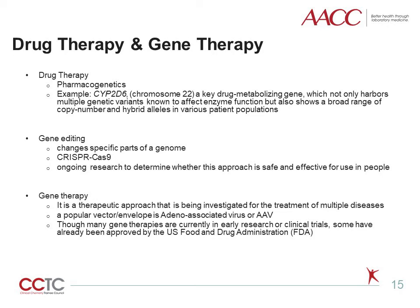Pharmacogenetics aims to study the gene variants associated with drug metabolism enzymes, transporters, and drug receptors, and to relieve the burden of sickness caused by inter-individual differences in drug response or vulnerabilities to drug toxicity. For example, the CYP2D6 gene on chromosome 22 is a key drug metabolizing gene, which not only harbors multiple genetic variants known to affect enzyme function, but also shows a broad range of copy number and hybrid alleles in various patient populations.